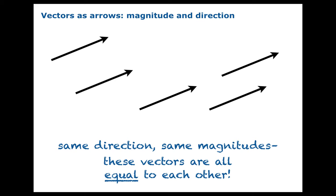Two vectors are equal — we call them equal — if they have the same magnitude and the same direction, and it doesn't matter where you place them. Now this might seem hopelessly ambiguous: why would you want to call two vectors equal if they lie in different parts of the plane? But it's actually quite flexible, and we want that flexibility for the kinds of problems we use vectors for.